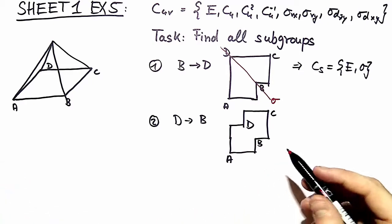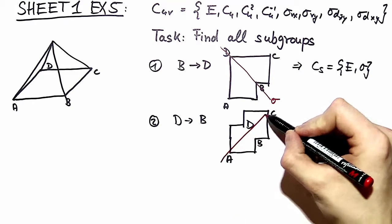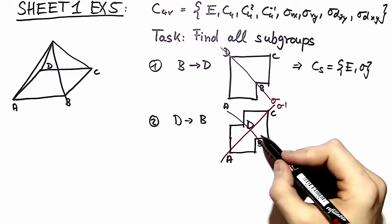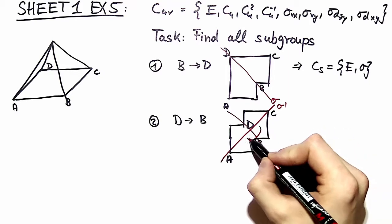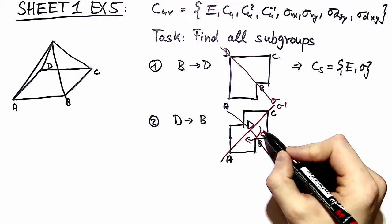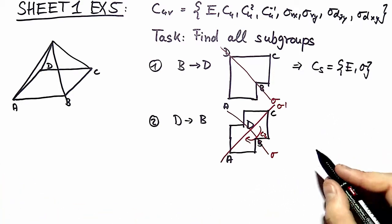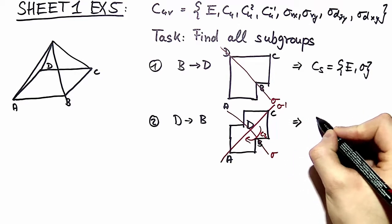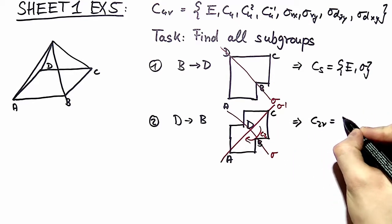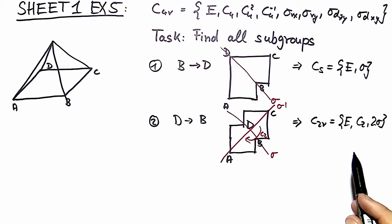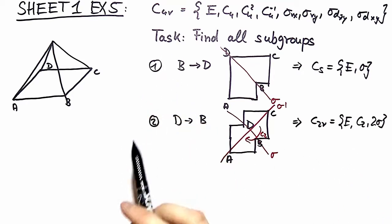In this structure you can see we have two mirror planes and we have a two-fold rotation. Of course, by the solution of exercise four we know that this is C2V, which is identity, two-fold rotation, and two times a reflection. This is also a subgroup of C4V.